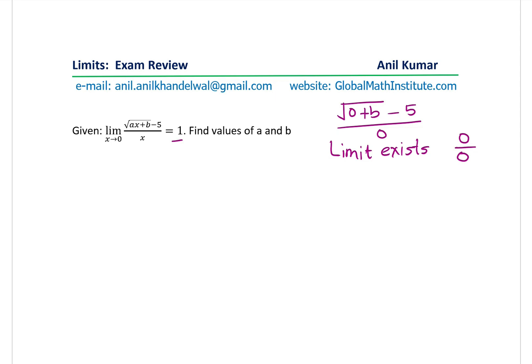So this particular condition gives you that the numerator should be equal to x. So at least one factor is x. So that means that the numerator which is square root of ax plus b minus 5 should be equal to 0 for x equals to 0. Only then the limit can exist.